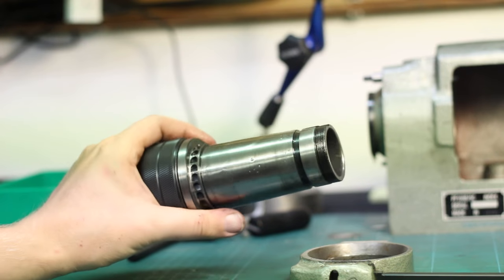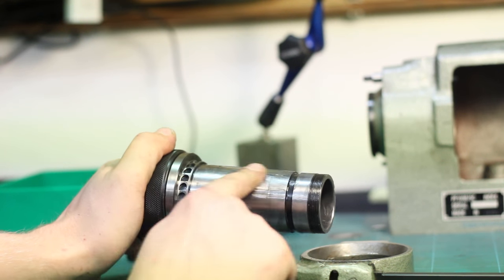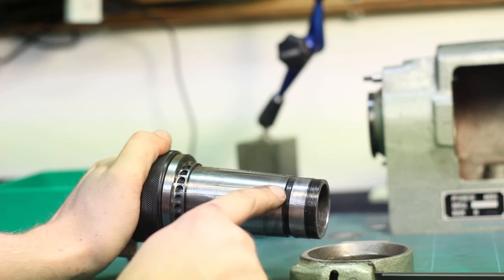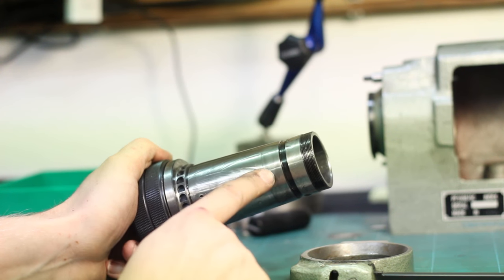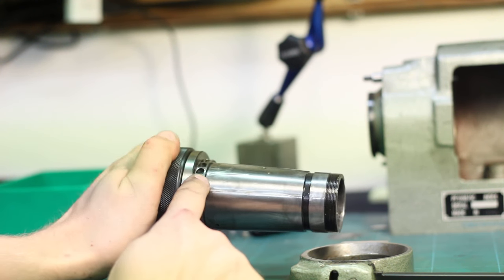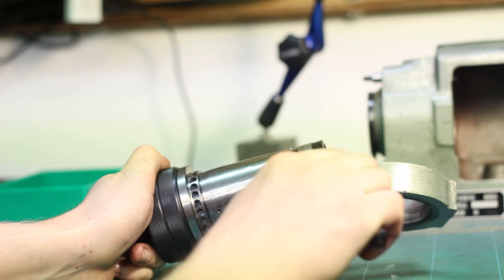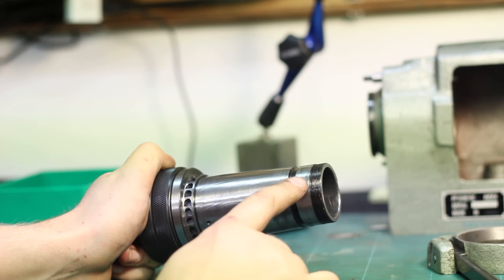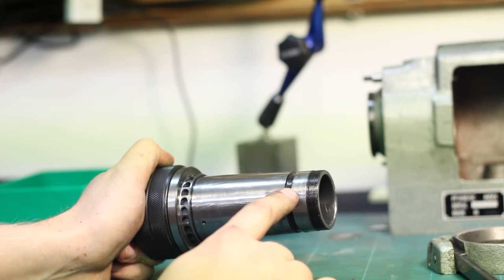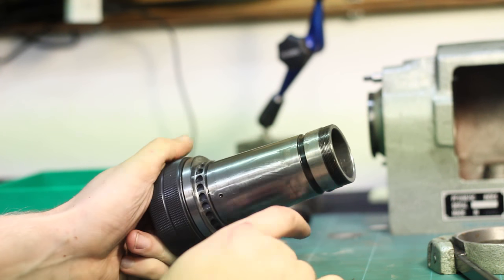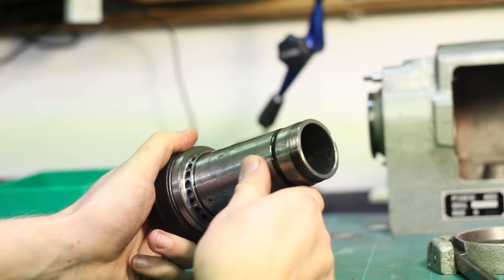Then we have this spindle, which is rather nicely made. It has this large tapered bearing here. These are the indentations for the ratchet mechanism in this ring here. And back here is the cylindrical portion where the index plate mounts. So, rather nicely made.